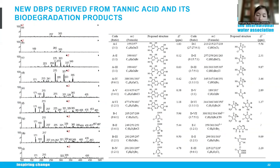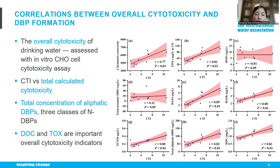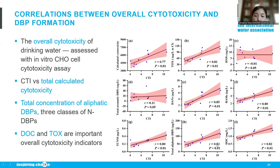To further ensure that the calculated toxicity contribution reflects the real situation, we extracted water samples and used in vitro CHO cell cytotoxicity to assess the overall toxicity. Interestingly, the CTI value obtained from overall cytotoxicity is highly correlated with the calculated cytotoxicity, supporting the rationale for using calculated cytotoxicity. Also, CTI value shows high correlation with formation of total aliphatic DBPs — however, if we change to total aromatic DBPs, there is no correlation. This further suggests that the currently selected individual aromatic DBPs are insufficient.